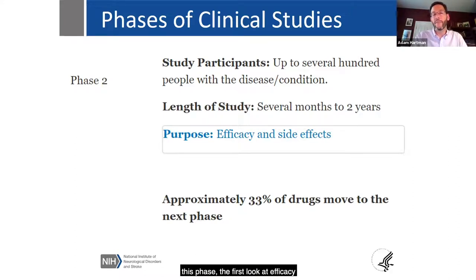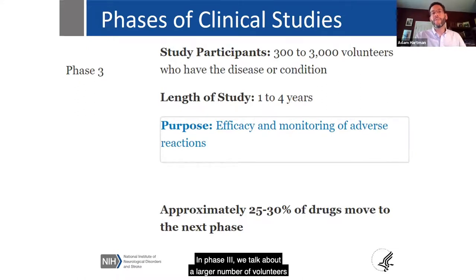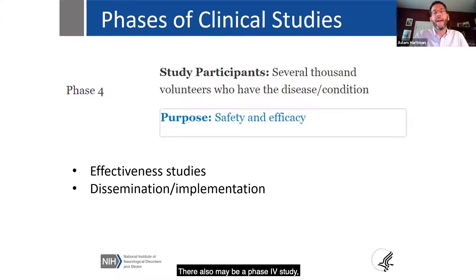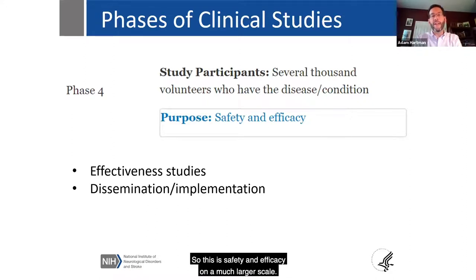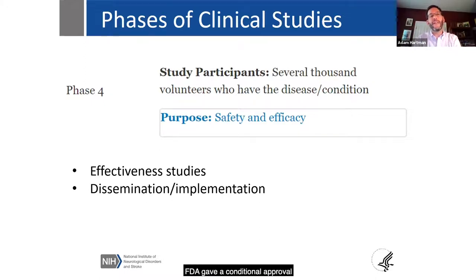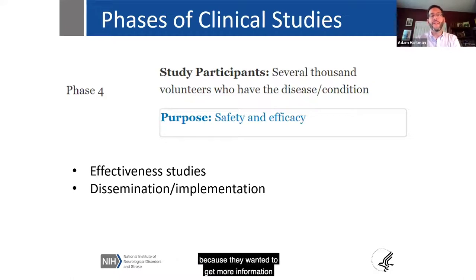This first look at efficacy is where most drugs fall by the wayside. In Phase 3, there's a larger number of volunteers and usually a longer duration, confirming what was found in Phase 2 regarding whether the drug works and is safe. There may also be a Phase 4 study — important in rare diseases — which is safety and efficacy on a much larger scale, also called a post-marketing study. A good example is spinal muscular atrophy, where the FDA gave a conditional approval of the first medication and wanted more information from the post-marketing study.